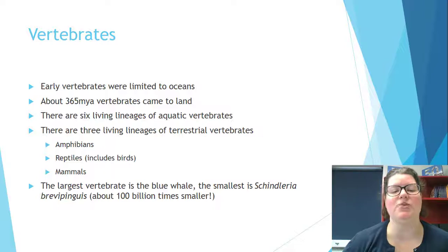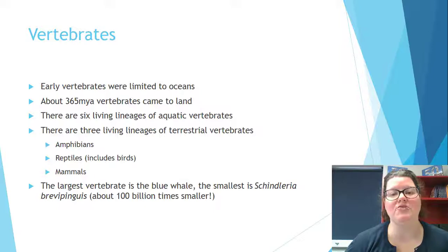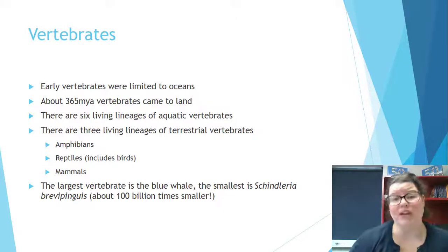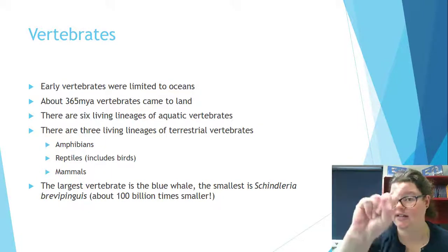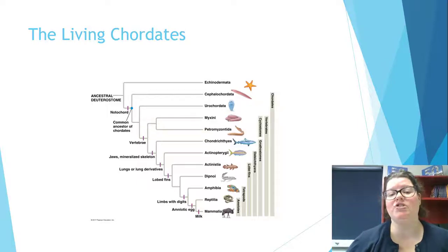Early vertebrates were aquatic — they lived specifically in salt water in oceans — and didn't start coming to land until about 365 million years ago. Today we have six living lineages of aquatic vertebrates and three terrestrial lineages. If you want to see a tiny fish, look up the smallest one, Paedocypris progenetica, because it fits right on an index finger.